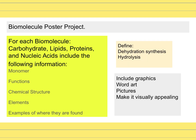Take a look at this rubric right here for the biomolecules poster. For each biomolecule — carbohydrates, lipids, proteins, and nucleic acids — you're going to include the following information: the monomer for carbohydrates, the function of carbohydrates, the chemical structure, the elements that make it up — remember CHO-CHO, CHON, and CHOMP — and examples of where they can be found.